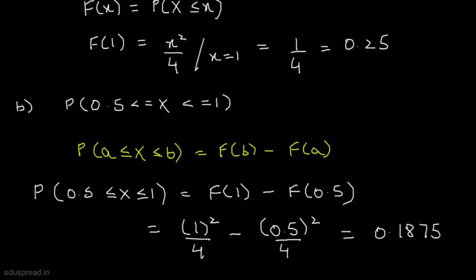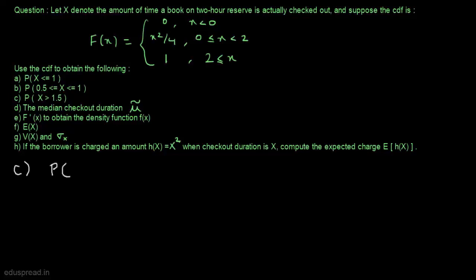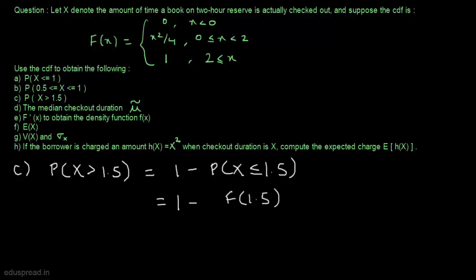Let's move to part C. In part C, we have to calculate the probability that X is greater than 1.5. We can use the complement rule: P(X > 1.5) = 1 − P(X ≤ 1.5) = 1 − F(1.5). Since F(x) = x² / 4 for x between 0 and 2, this is 1 − (1.5² / 4) = 0.4375. So this is the probability that X is greater than 1.5.